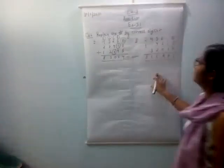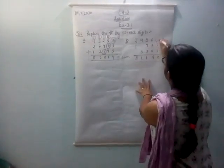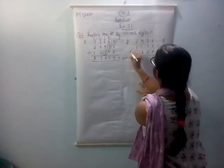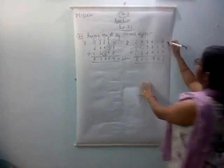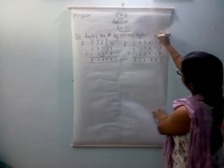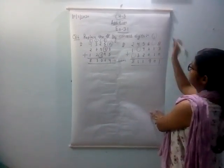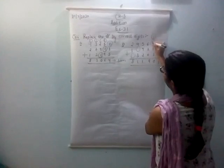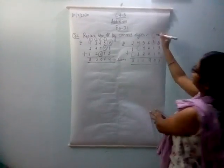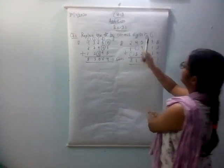Now come to Part B. Again the blank space is given to you. 8 plus 3 is 11, and carry forward 1 over there. 1 plus 2 plus 3 and 7 will be 10 — again, 0 is given to you over there.